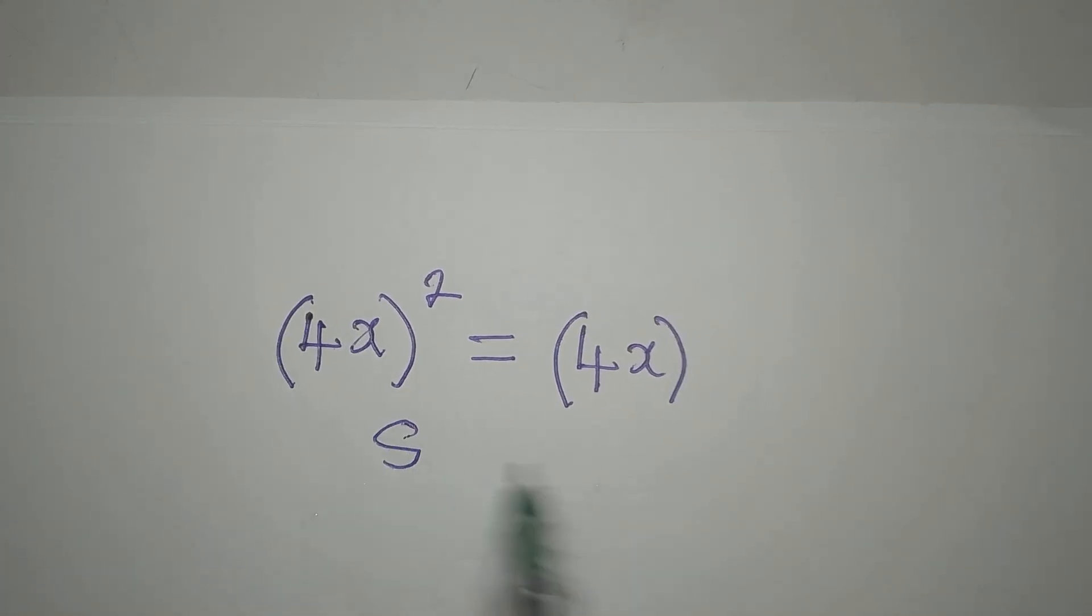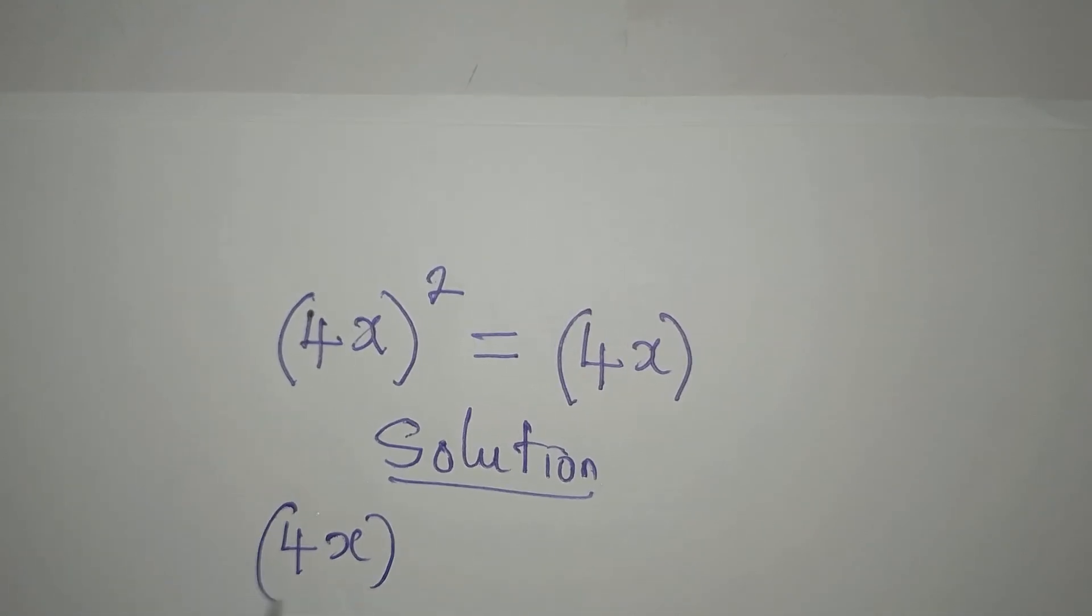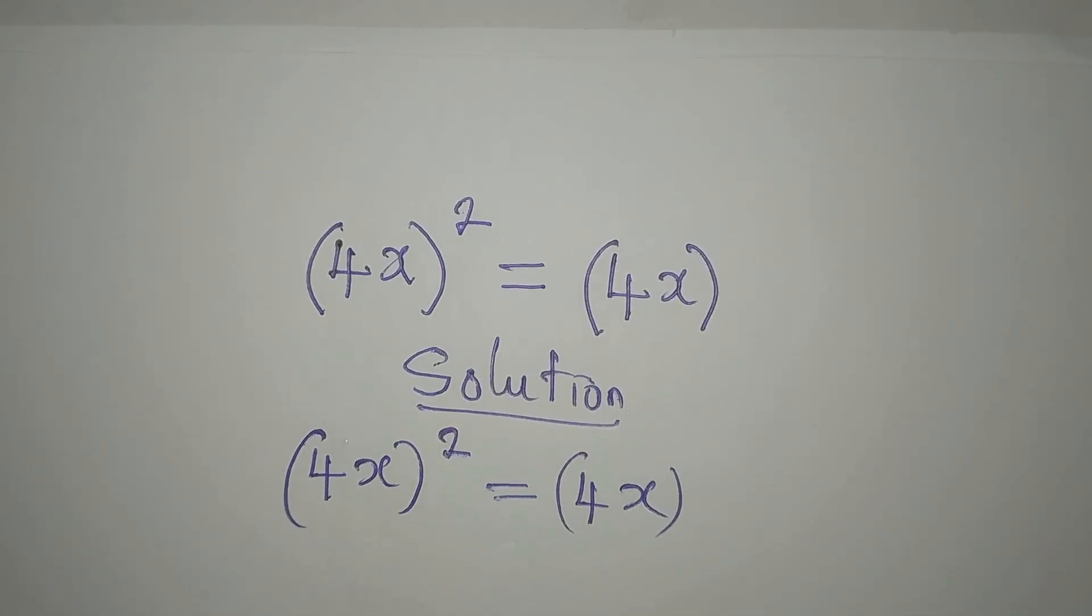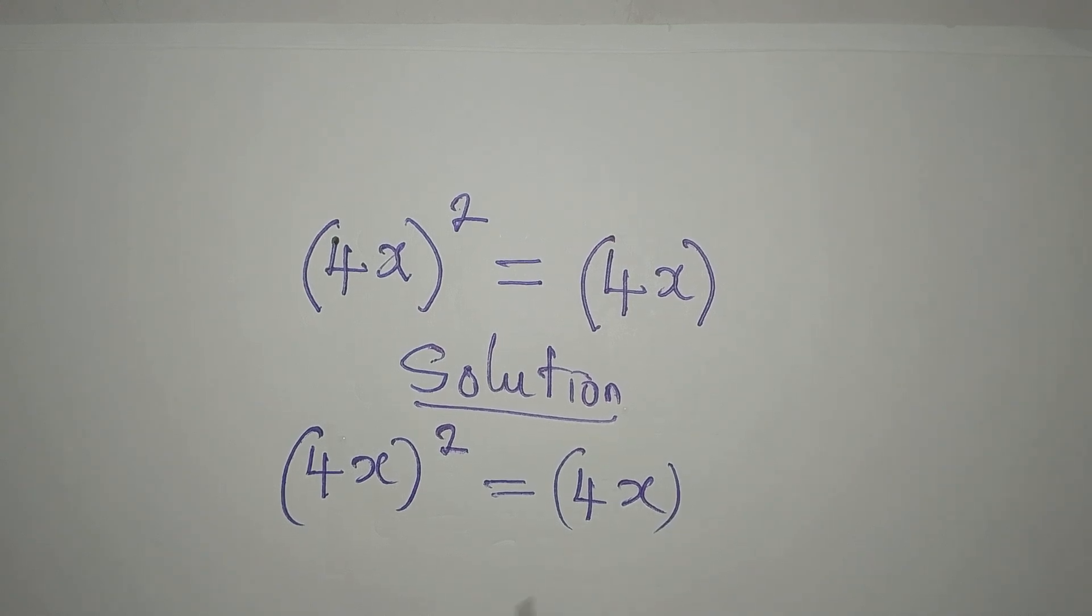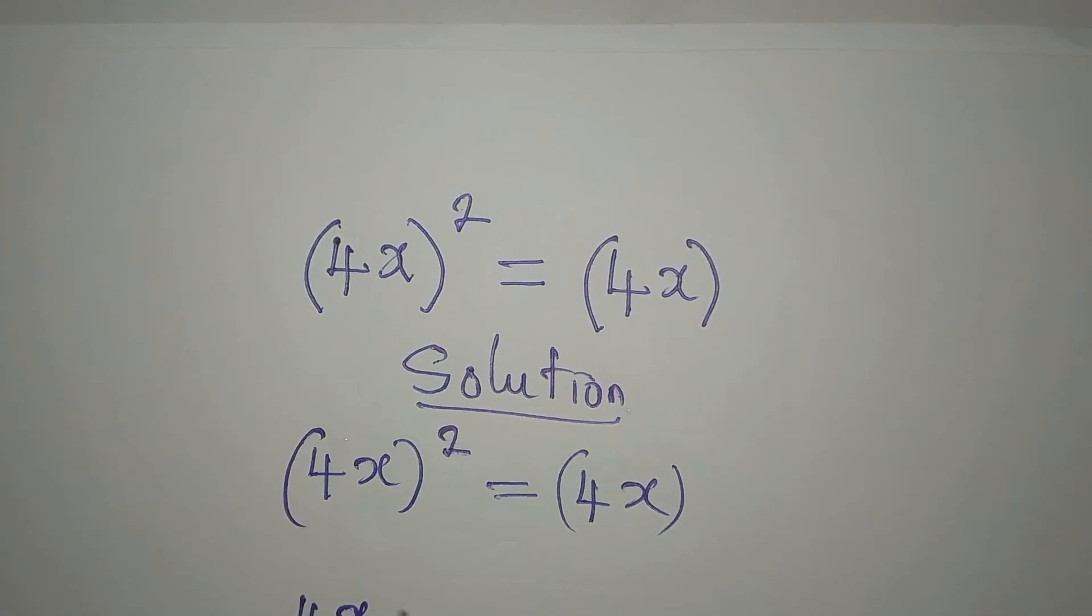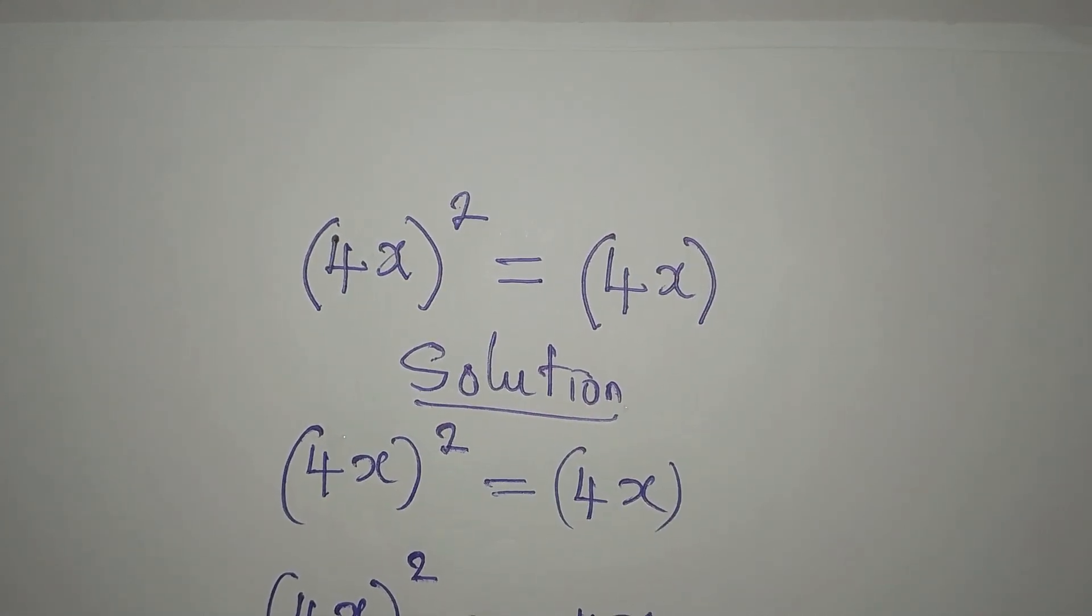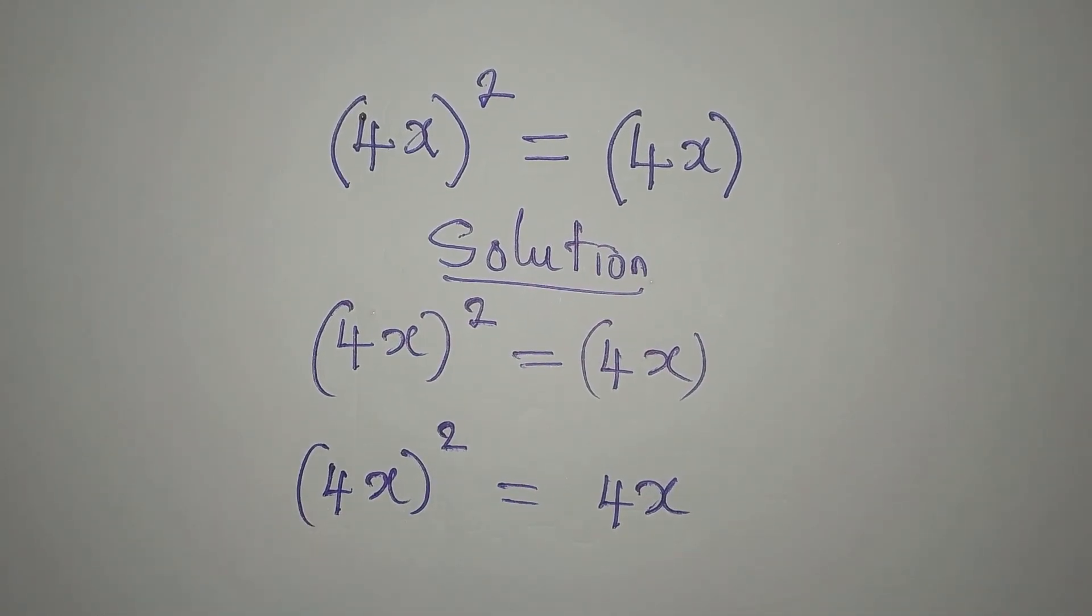Hello everyone, let's solve this problem: we have (4x)² = (4x). Remember that this bracket does not have any power, so you can remove the brackets. We have (4x)² = 4x. Do not divide both sides by 4.